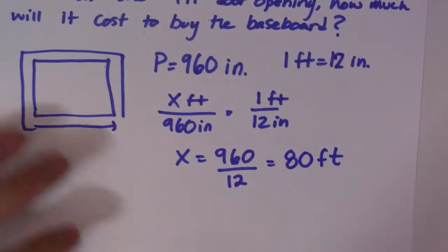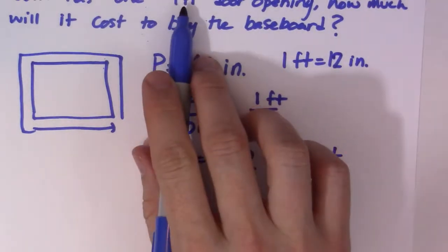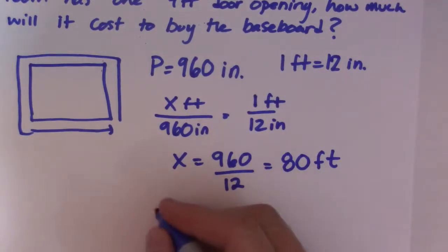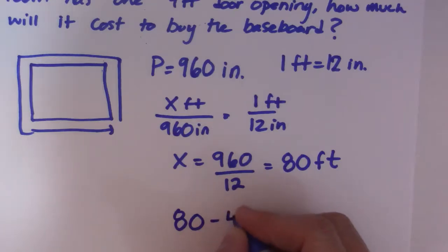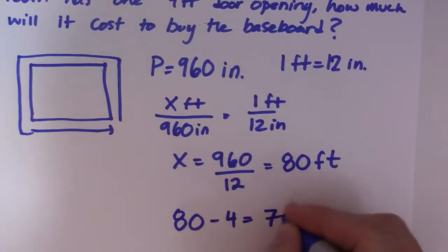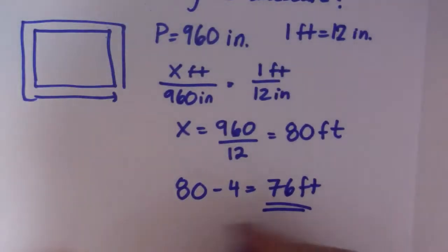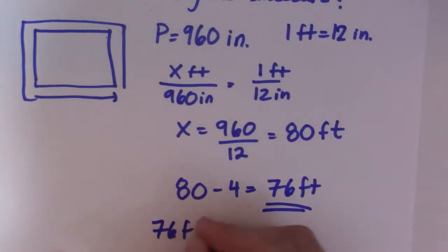Now what I need to do is account for the fact that I have that 4-foot door opening. So I'll take my 80 and subtract 4 from it, and I get 76 feet. So that's the length of baseboard that I need. I need 76 feet of baseboard.